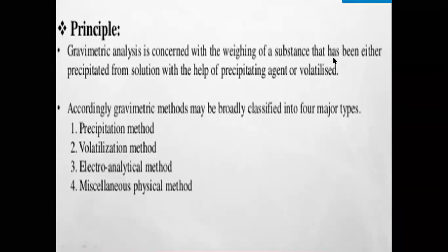The principle of gravimetric analysis: we weigh a substance that has been either precipitated from solution with the help of a precipitating agent, or volatilized. We convert the analyte by reacting it with an appropriate precipitating reagent. For example, to find out the concentration of chloride, we add silver nitrate as a precipitating reagent. Upon addition of AgNO₃ to the analyte containing chloride, formation of AgCl precipitate takes place. From the weight of AgCl we can determine the concentration of chloride.